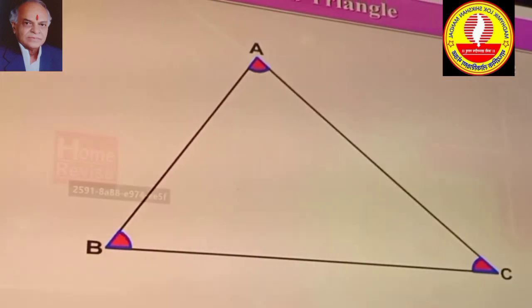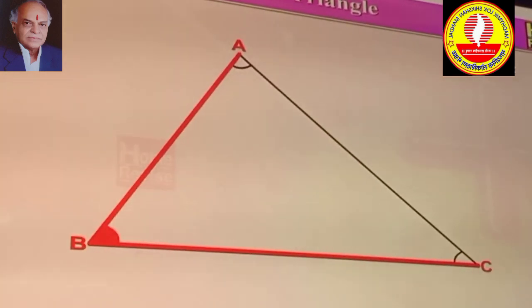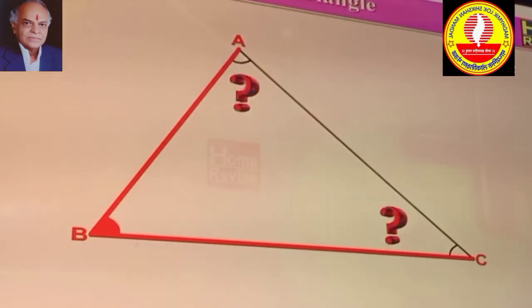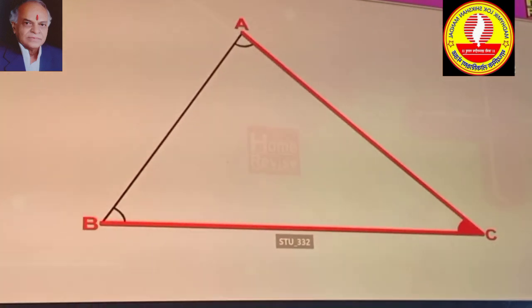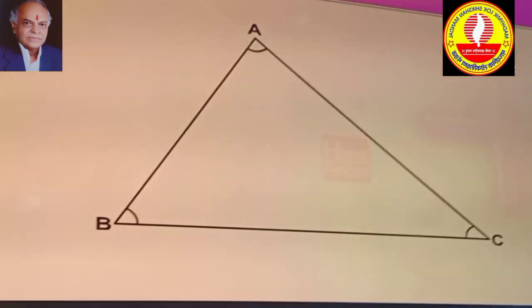Every triangle has three angles. So, if angle ABC is one angle, then can you name the other two angles of a triangle? Angle ACB and angle BAC are other two angles.